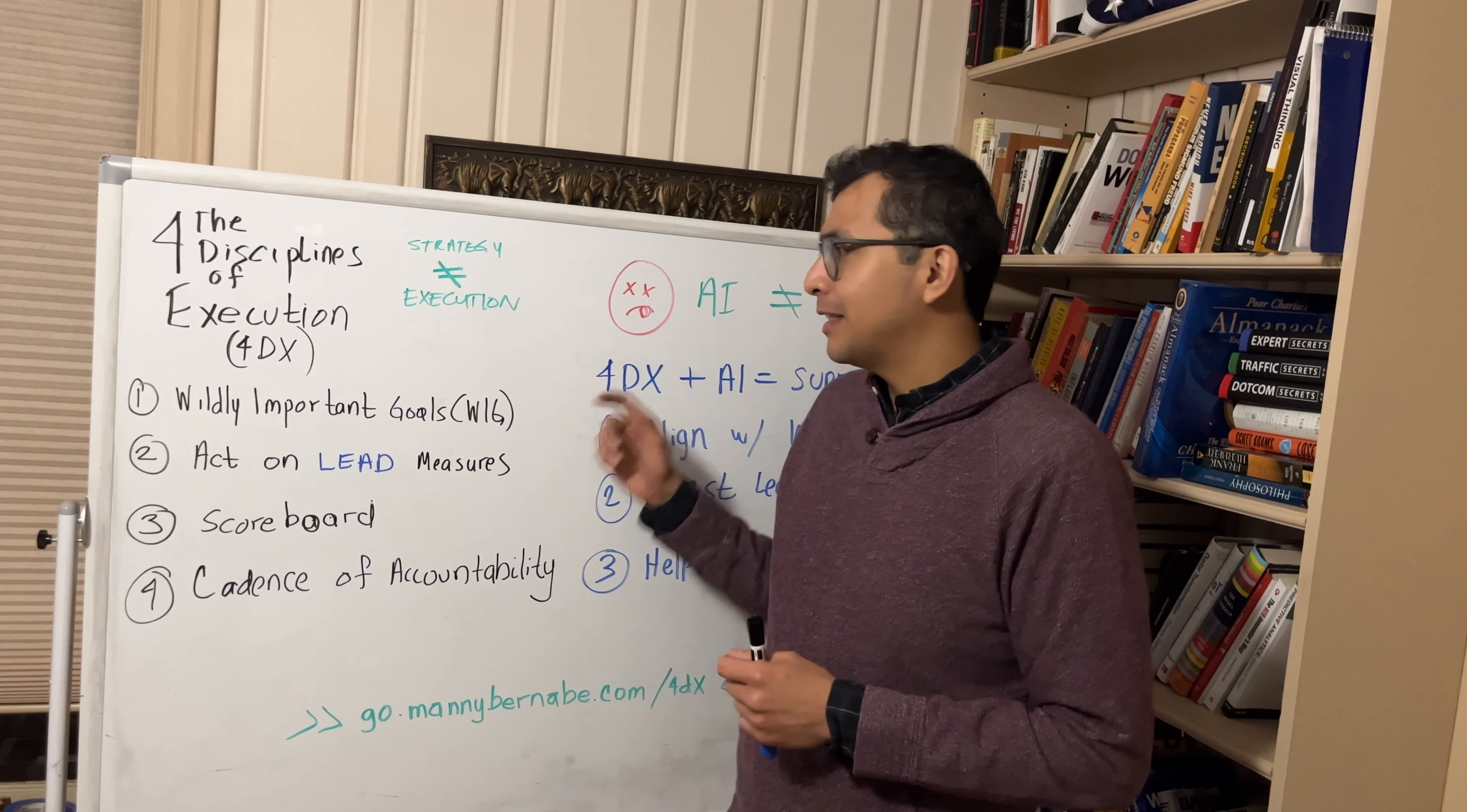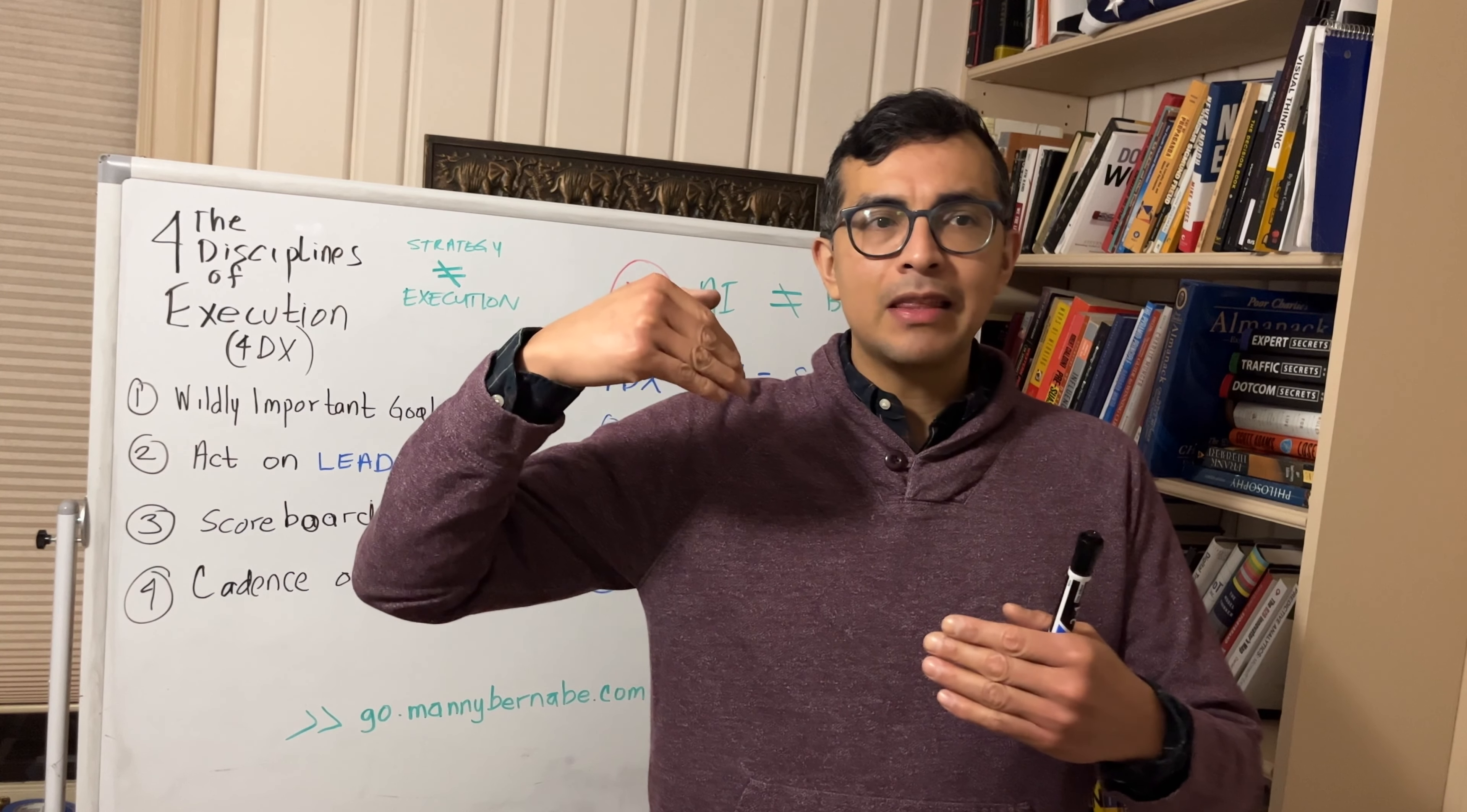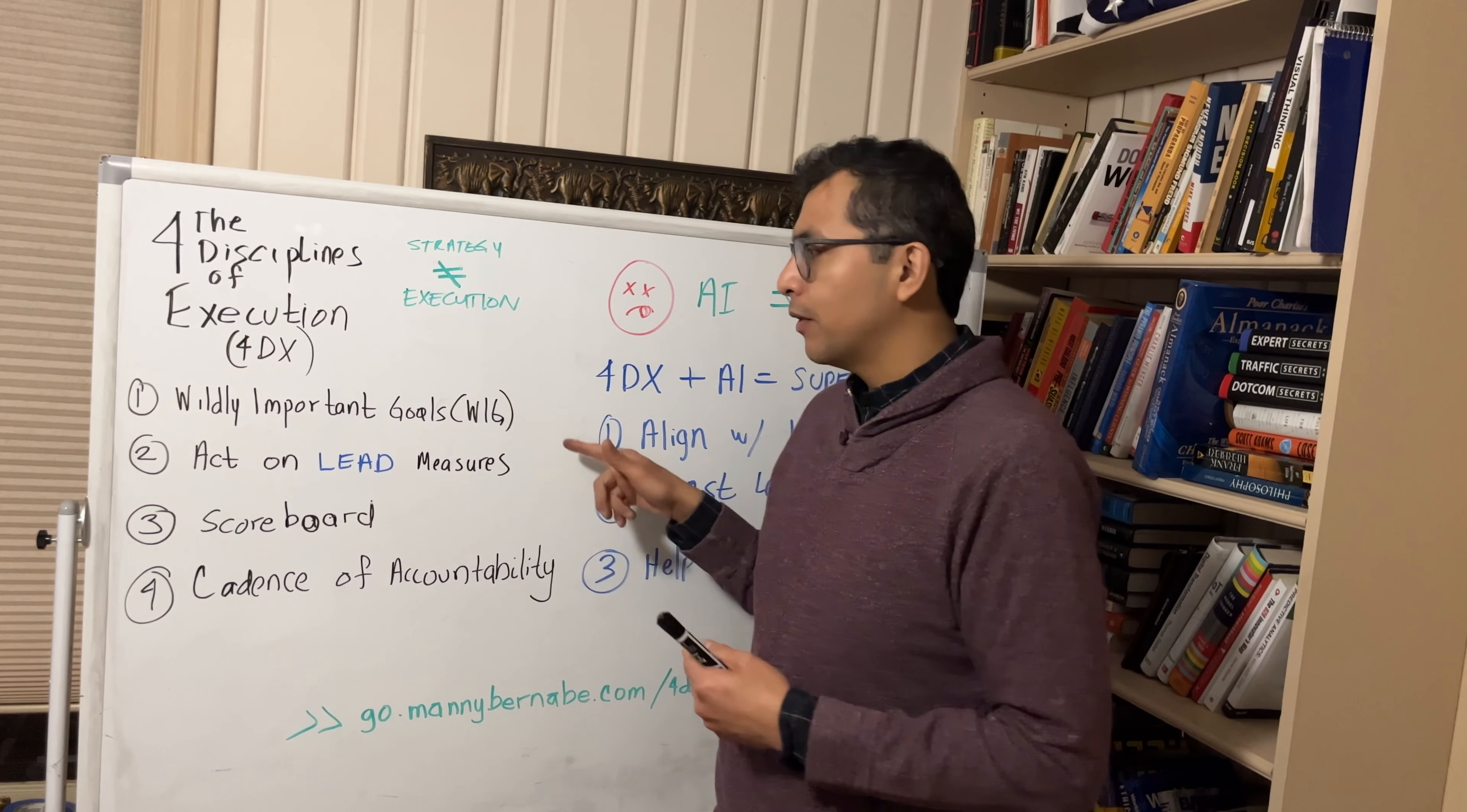So number one is, when you start a new AI project, try to think about what's the overall WIG for that team and try to align your AI project so that the output of that project is going to help with that WIG or is at least aligned with that particular WIG for the team.